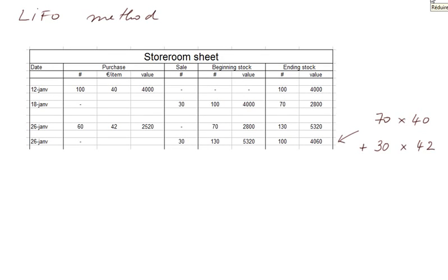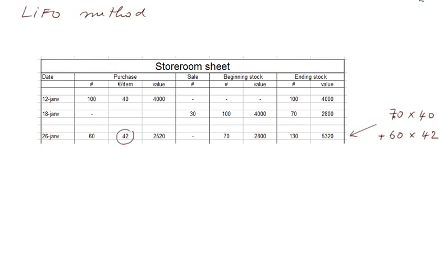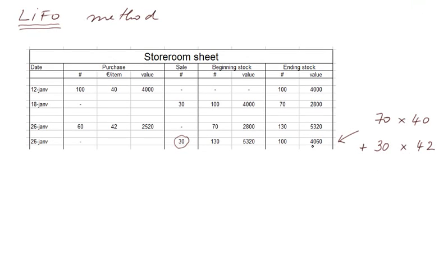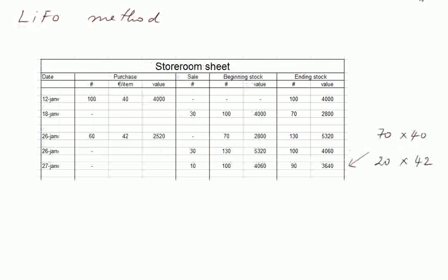Then I sell 30 items on January the 26th as well. Here the method we use matters, and we use the LIFO method — that is, we assume we are selling the most recent items in our stocks. So the stock goes down from 130 to 100, and we deplete the most recent ones. The figure of 60 goes to 30, so the ending stock value is 4,060 euros. On the 27th, we sell another 10 items, again using LIFO, depleting the most recent items as much as possible. The 30 goes to 20, and the final stock value is 3,640 euros.